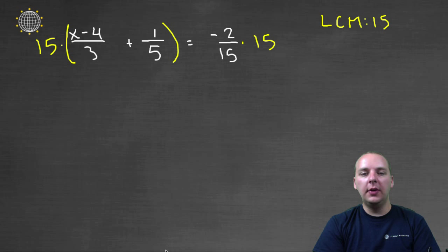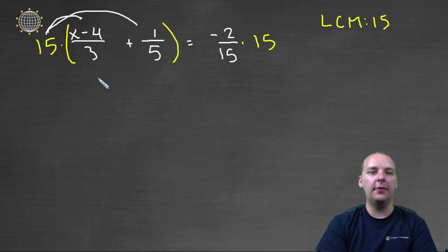Alright, what we're going to do next, and this goes along with simplifying both sides of the equation, is distribute the fifteen to both terms on the left.